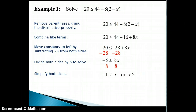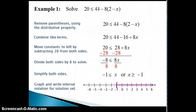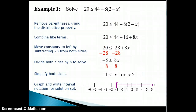Or in other words, x is greater than or equal to negative 1. Next, we'll graph and write the interval notation for this solution set. The arrow starts at negative 1 and includes negative 1 with the bracket, then points to all numbers greater than negative 1. Thus, our interval is from and including negative 1 to positive infinity.